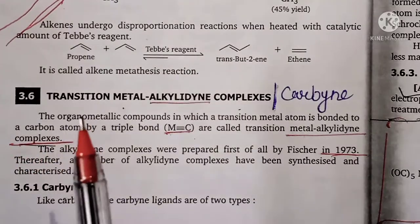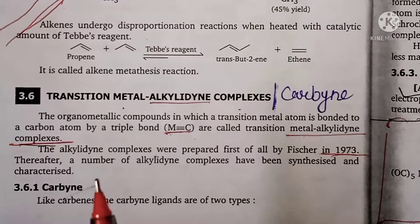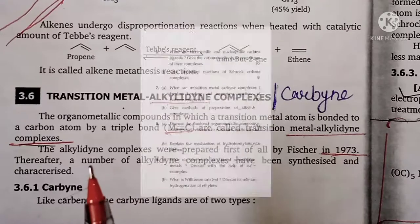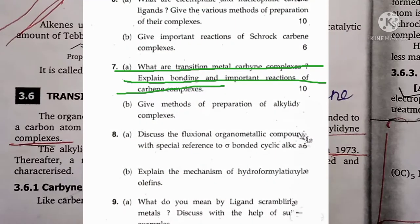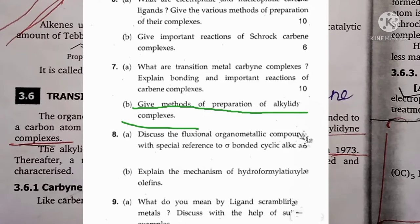So first of all, I will show you the question paper. Question number 7: What are transition metal carbyne complexes? Explain bonding and important reactions of carbyne complexes. And this part: Give the method of preparation of alkylidyne complexes.